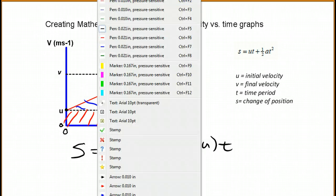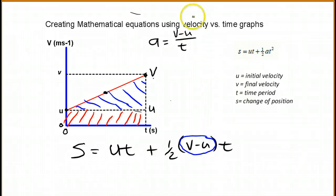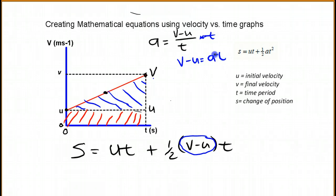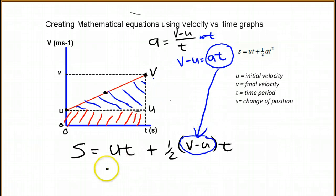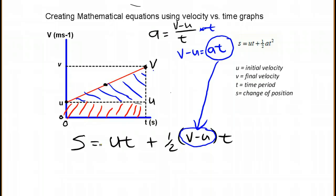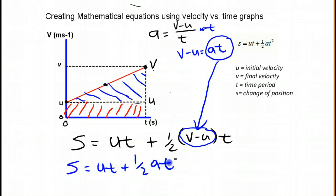I've got V minus U right here, and I'm going to replace that by what it is equal to. If I multiply both sides by T, I can say that V minus U is equal to A times T. I'm going to replace it in here where the V minus U is. We can rewrite and come up with the equation: S equals UT plus one half of AT times T, which is the same as saying UT plus one half of the acceleration times the time squared.